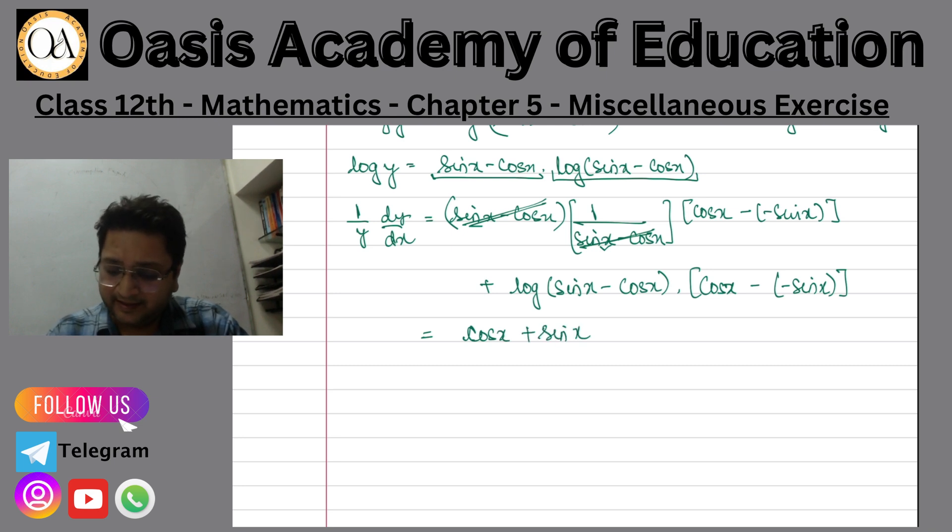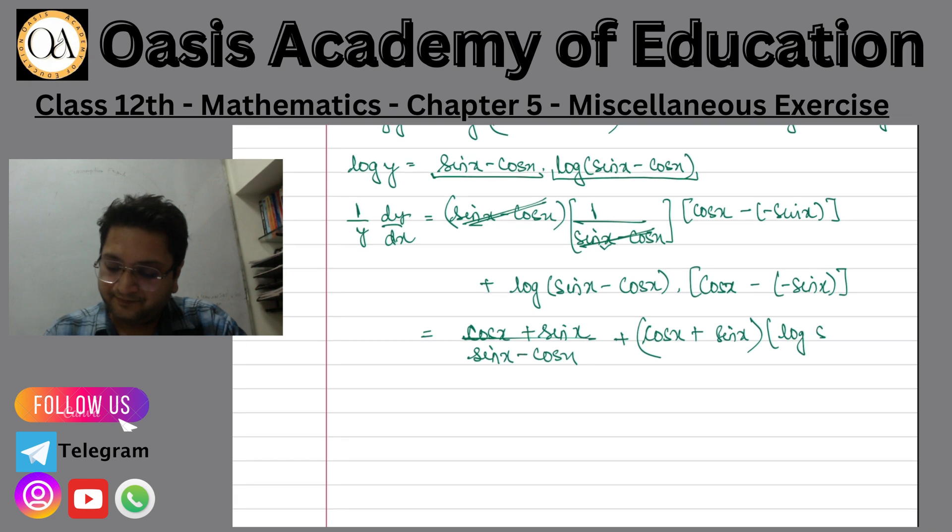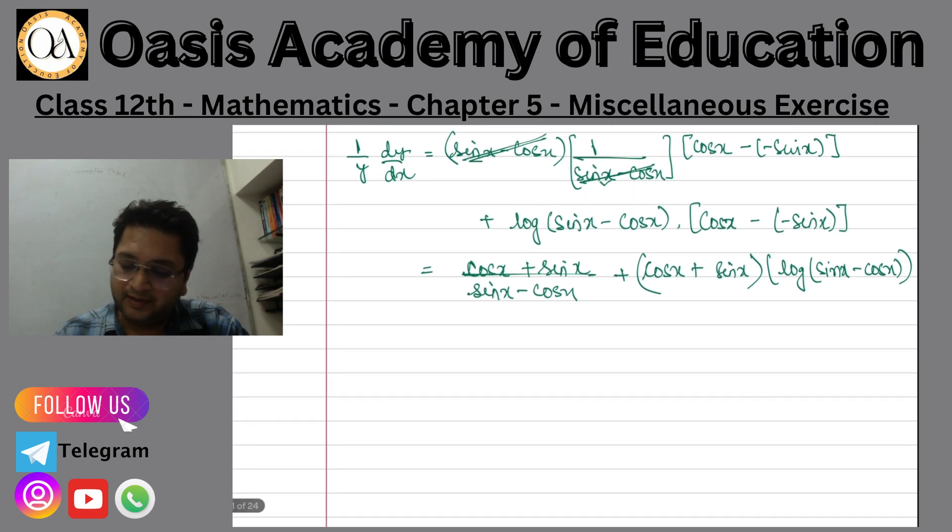Cos x plus sine x divided by sine x minus cos x. Then plus sine x and here log sine x minus cos x. So if you can see, this is the final answer. If you can see, I can take something from here. Cos x plus sin x common. So if you can see, here 1 by y dy by dx.